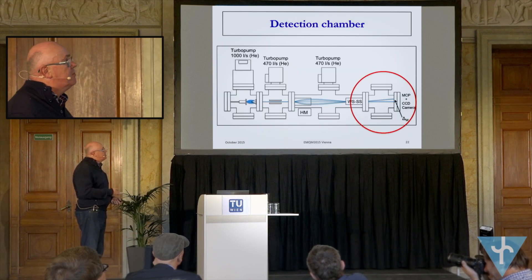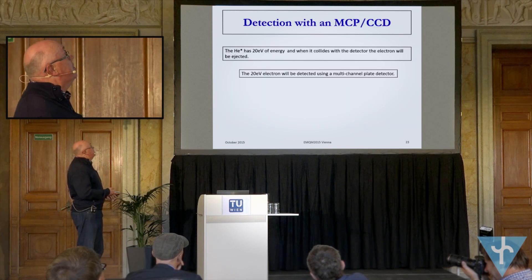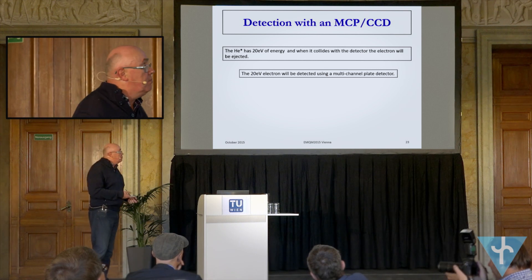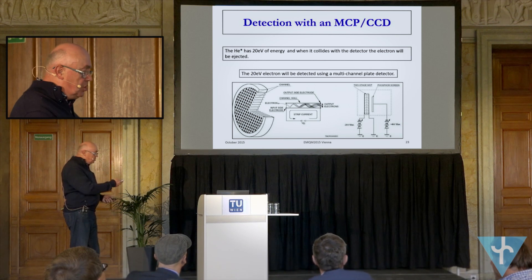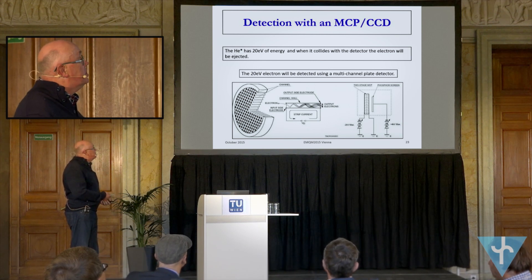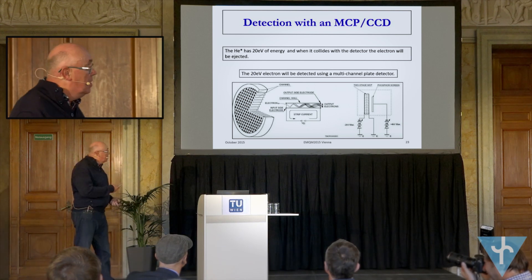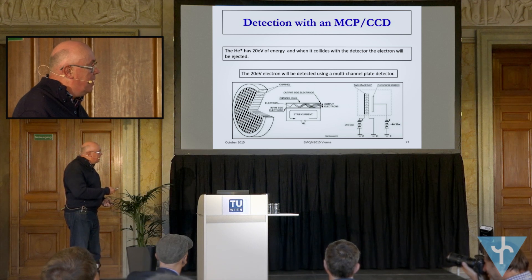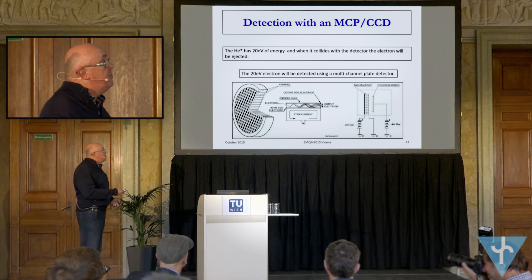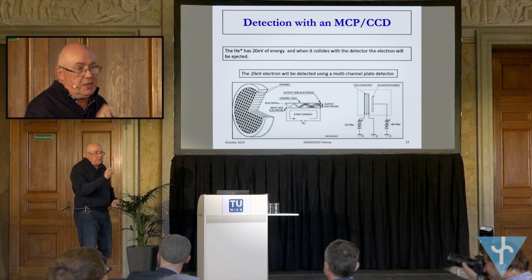Finally, the detector. It's a straightforward MCP — a lot of people use them, and they're fairly common today in industry as well as in laboratories. It's really like a photomultiplier tube, only lots of little photomultiplier tubes where the electrons bounce down. Then you have a phosphor screen which collects that energy and converts it to light, and on the end you have a camera and you take pictures.